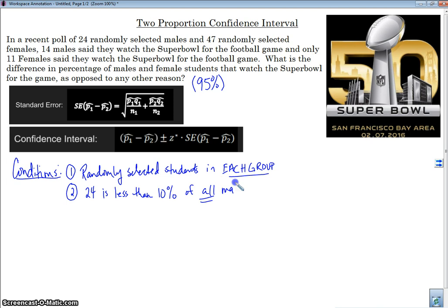Again, we're doing two groups. And 47 is less than 10% of all female students. So we're looking at two different groups. Now, the other thing that's very important for this, it's an additional thing that's different than the previous ones, is that both groups are independent of each other.